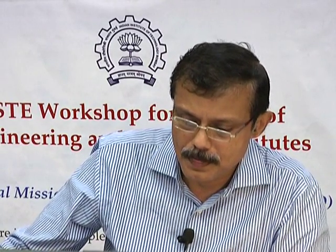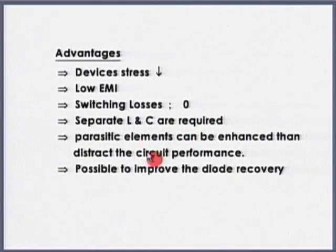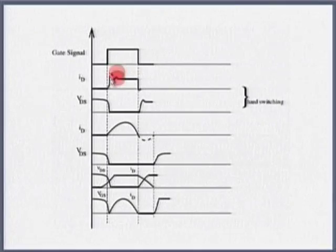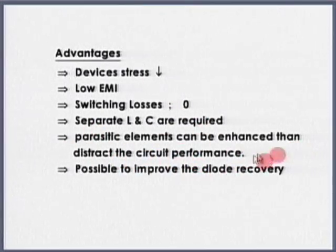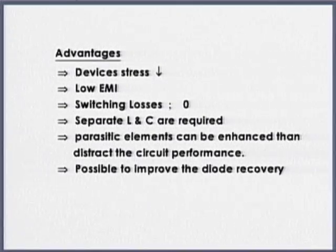These are the advantages of soft switching: EMI is addressed, size and footprint will come down. However, additional L and C are required, complexity is increased, and you may have to use an additional switch as well. Device stress is low, EMI is low, and switching losses are zero. Parasitic elements can now be used to our advantage - that parasitic inductance I can use for resonance. It is also possible to improve diode recovery as well, and diode recovery can be handled very efficiently.